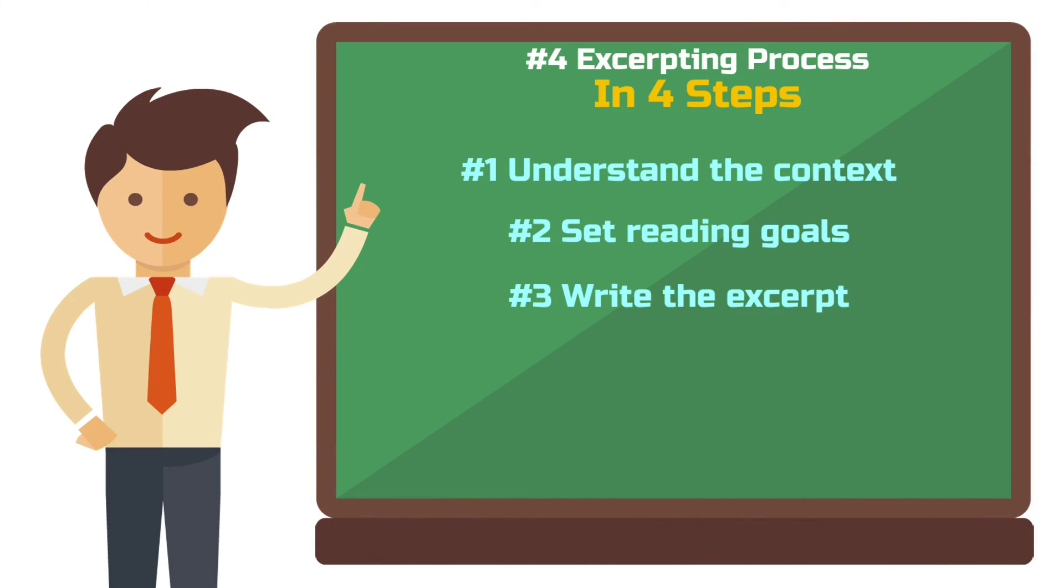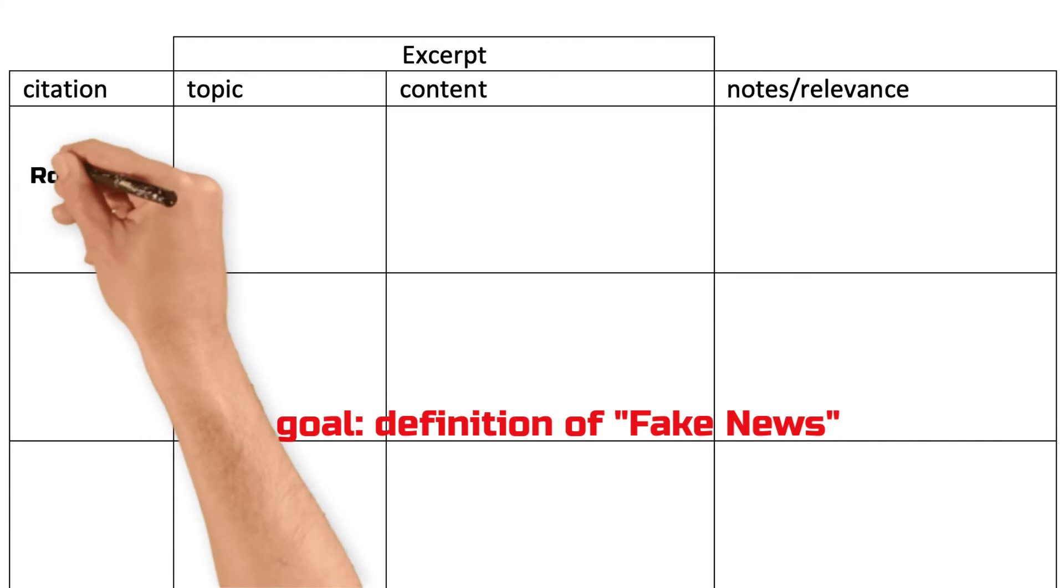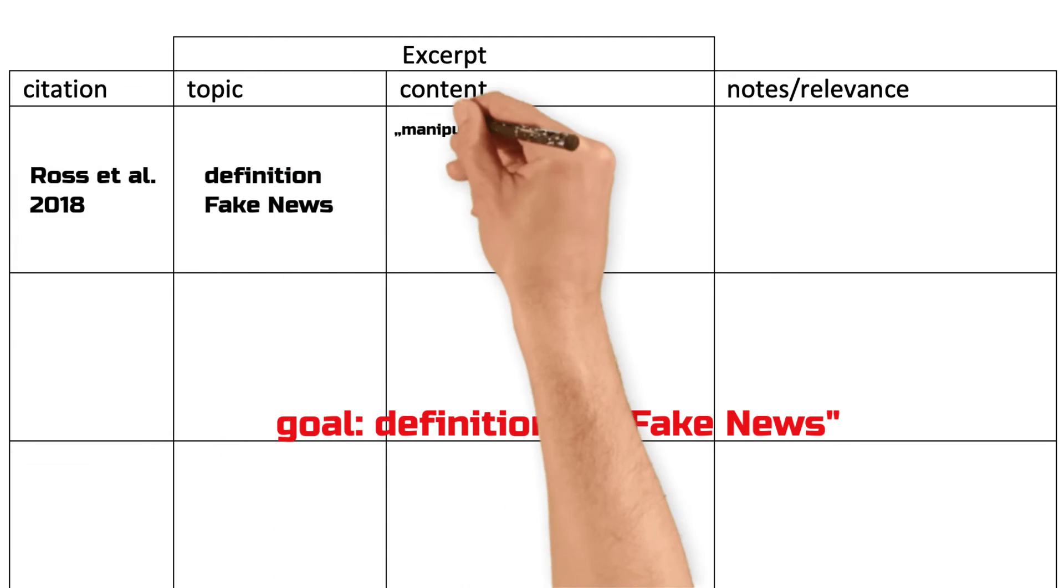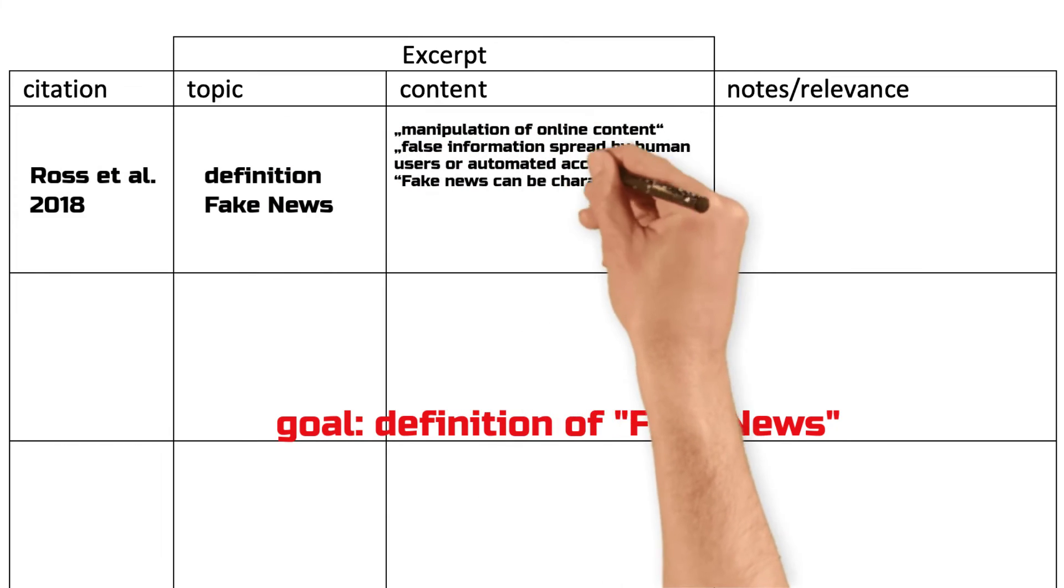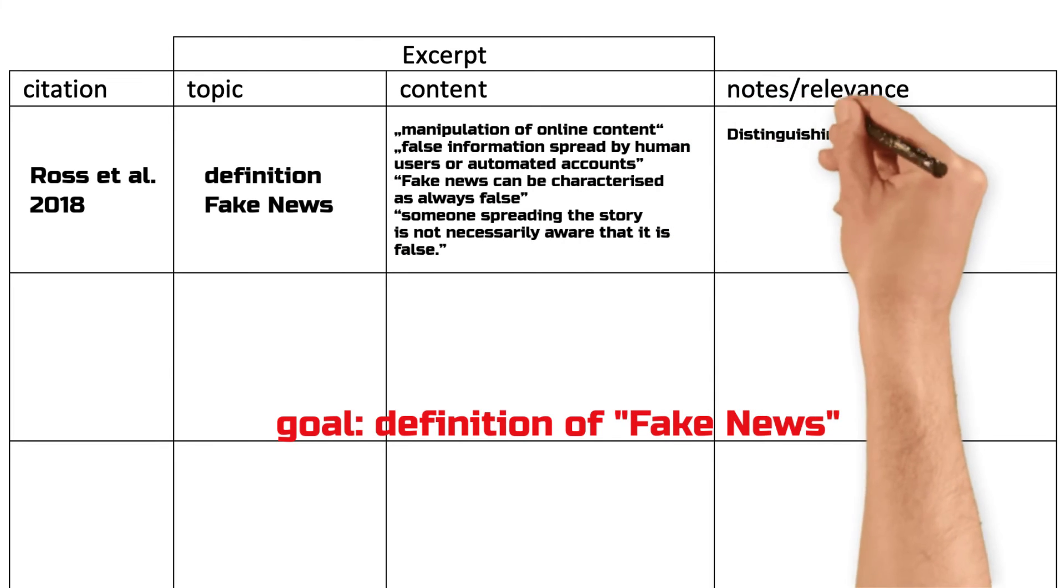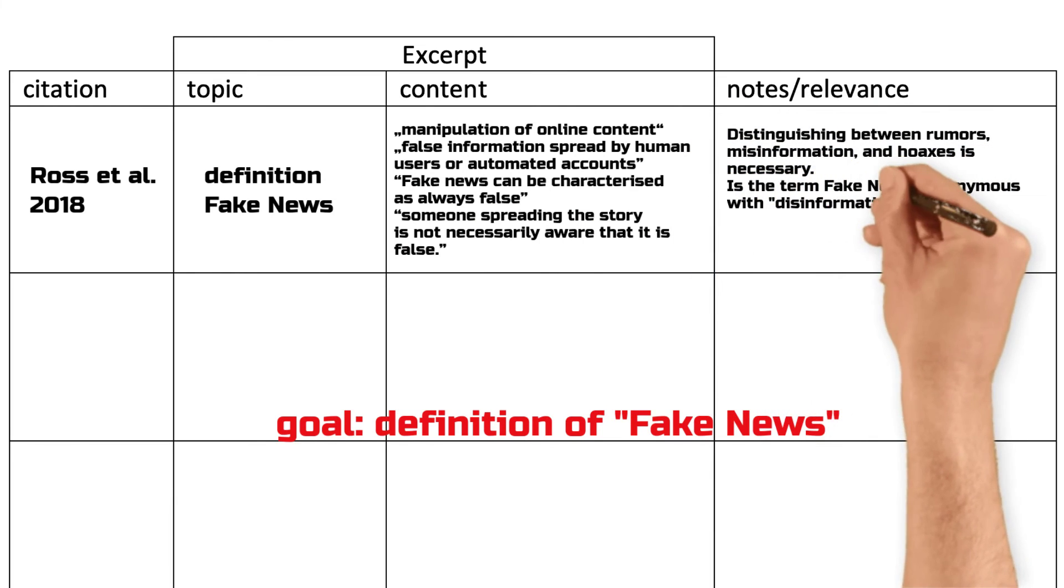Three. Write the excerpt. Now you fill out the table. Let's do this with a simple example. For your academic work, you are looking for a definition of the term fake news. On the far left, you enter the scientific source you are consulting. Then enter the topic in the second column. In the third column, you now collect text passages. This approach is best suited here since you would most likely incorporate a definition as a direct quote into your own work. In the rightmost column, you have spaces for notes that are important for you and your text. I mean the text that you are writing. Here I often write down ideas and problems that come to mind while reading. This is how your excerpt table could look like now.